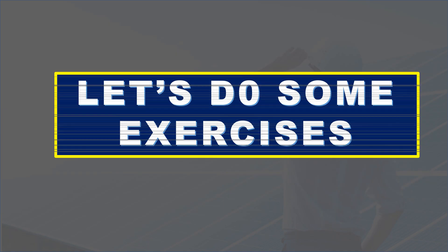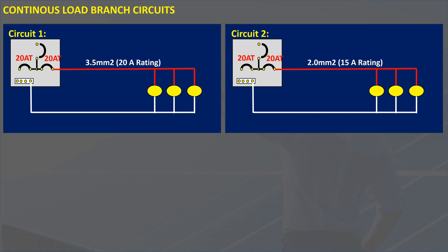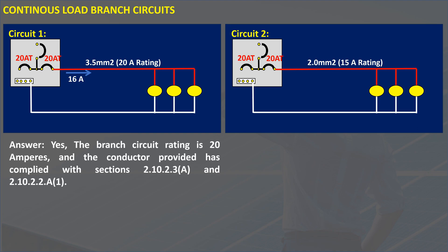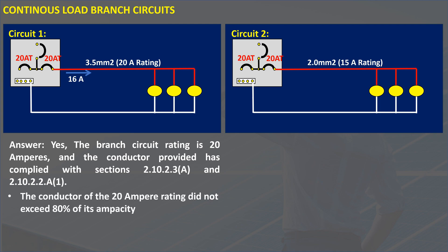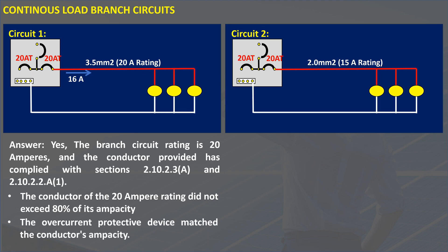Let's do some exercises. A 16 amperes continuous load is connected to a circuit rated at 20 amperes. The conductor provided is rated at 20 amperes, as shown in circuit number 1. Is this circuit compliant with the code? Yes. The branch circuit rating is 20 amperes, and the conductor provided has complied with Sections 2.10.2.3 A and 2.10.2.2 A1. The load on the 20 amperes rated conductor did not exceed 80% of its ampacity, and the overcurrent protective device matched the conductor's ampacity.